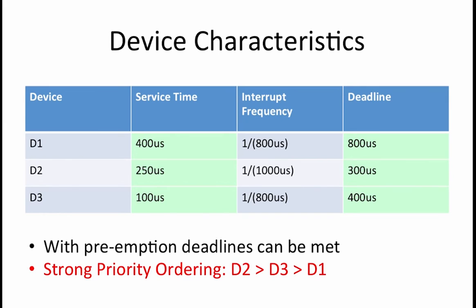Note that, for this example, this priority ordering is the only valid ordering that will satisfy all the constraints of our strong priority system. To convince ourselves of this, let's take a closer look at other priority possibilities. If D1 had a higher priority than either D2 or D3, then the deadlines for D2 and D3 would not be guaranteed to be satisfied, so D1 must have the lowest priority. Between D2 and D3, if D3 had a higher priority than D2, then if D3 was being serviced when a D2 interrupt arrived, the D2 interrupt may not complete until 350 microseconds, which is beyond its deadline. So D2 must have the highest priority, then D3, and finally D1.